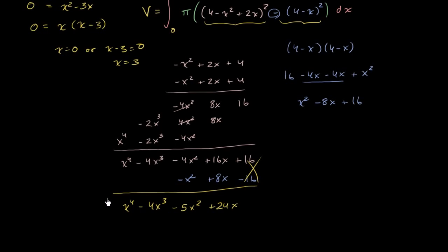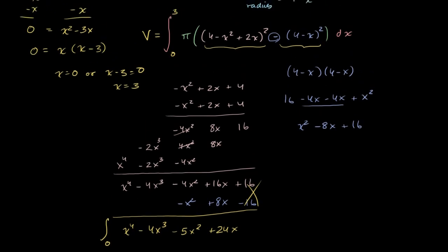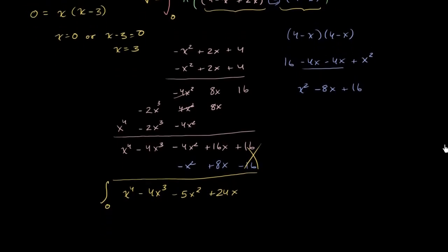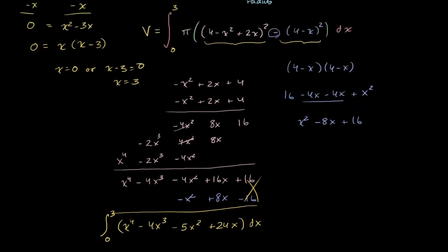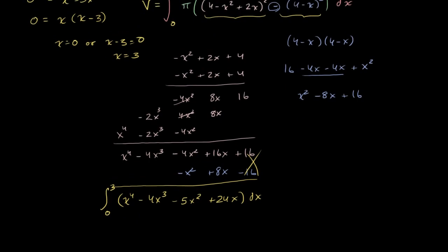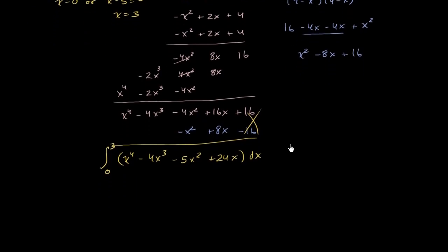So we're going to take the integral of this expression from 0 to 3 dx. And then we had a pi out front, so I'll just take that out of the integral. Times pi.